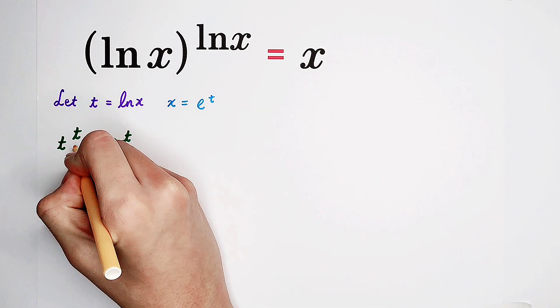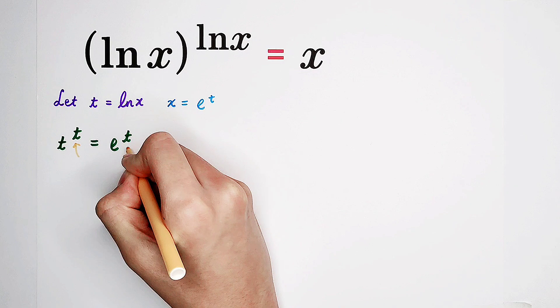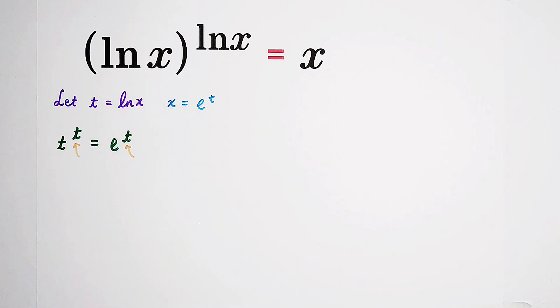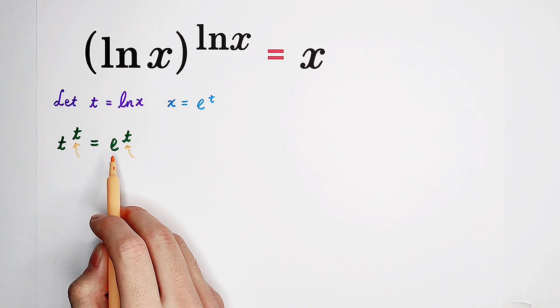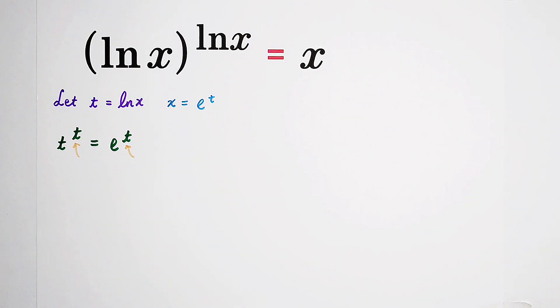You can see, here t, here t, they are the exponents. So they are the exponents. Can we actually divide both sides by e to the power of t? Of course we can. However, on one condition, that is, e to the power of t is not equal to zero.